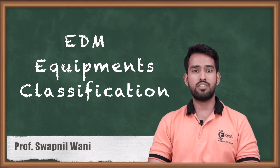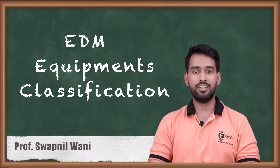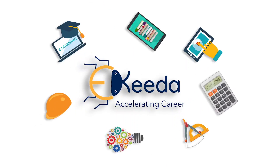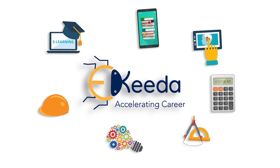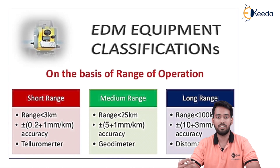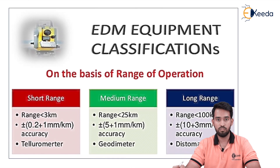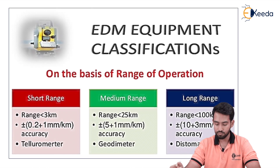Today's topic of discussion is EDM — Electronic Distance Measurement device. EDM is an instrument basically used to calculate distance, a linear measurement. We can calculate horizontal distance as well as vertical distance or an inclined distance by using EDM.